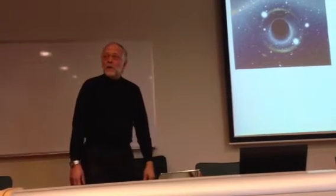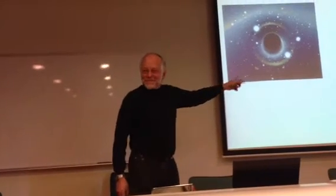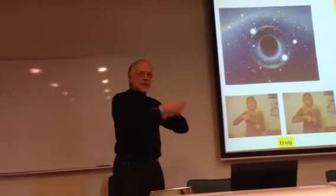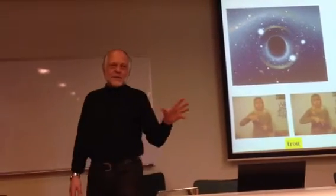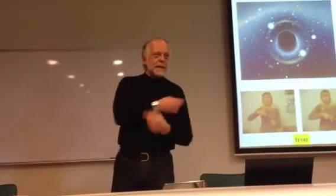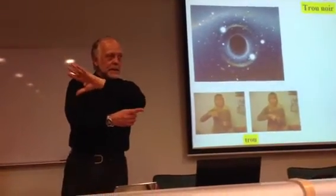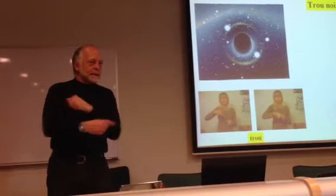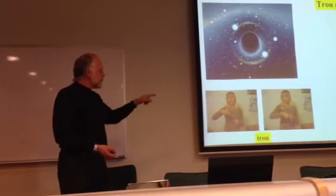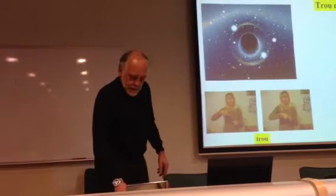A black hole — more difficult, because this sign didn't exist two centuries ago. So it's black, a hole, but you reverse. The sign language is constructed when you say 'black hole' like in German, where the verb comes at the end — 'Ich bin gegangen.' This is the same in sign language. So you say: hole — hole is like that, you can use this sign — and then black.